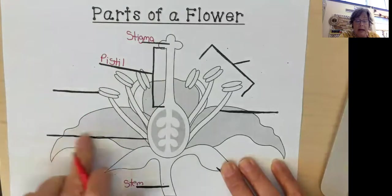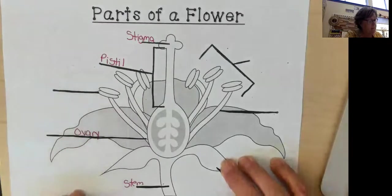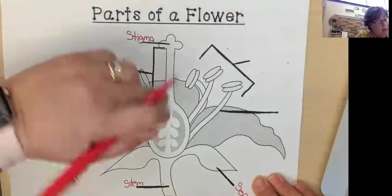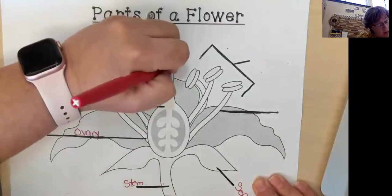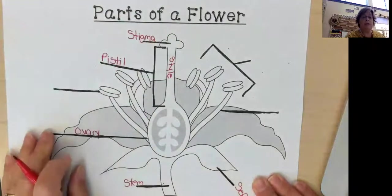But our pistil is broken into different parts. At the top we have the stigma. We have our ovary. And we have our style. I'm just going to write the word style right there on it. Remember our style supports the stigma.